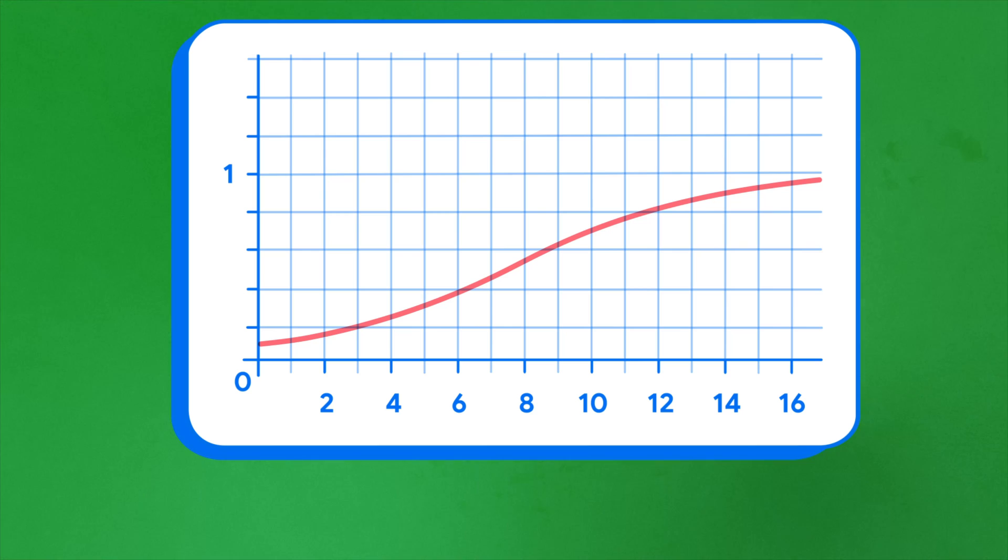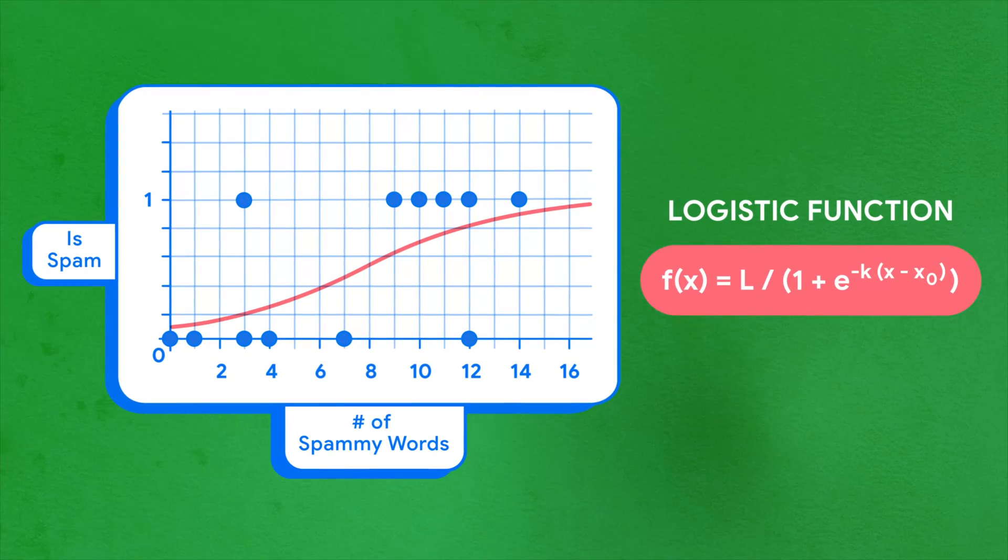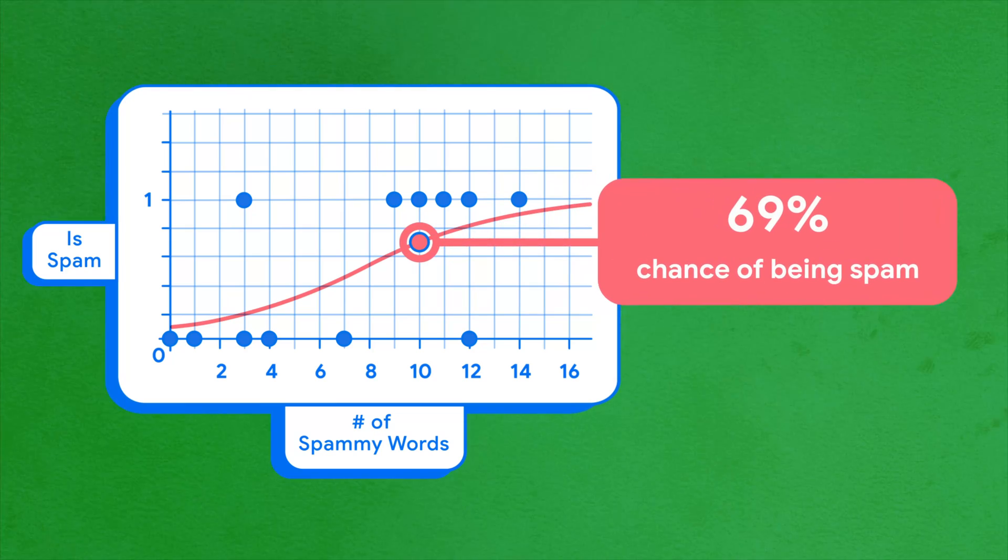We can use it to map the outputs of our linear model to a continuous probability range. Now we can retrain our model to calculate the probability of spam for any value of our feature, the number of spammy words. Using our logistic regression model, we can predict that our email with 10 spammy words has a 69% chance of being spam.